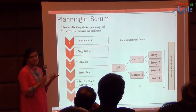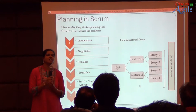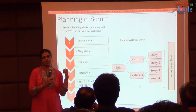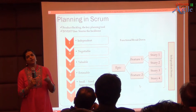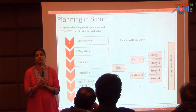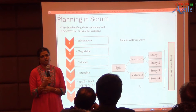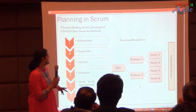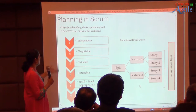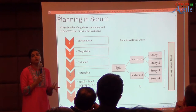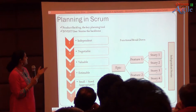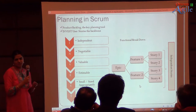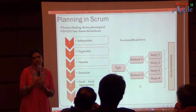How is planning done in Scrum? Unlike a traditional WBS, in Scrum we do planning through the product backlog. The product owner writes user stories into the product backlog. We talk about the INVEST principle — user stories should be independent, negotiable, valuable, estimable, and small.